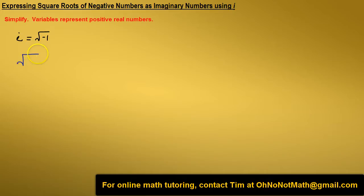First example, the square root of negative 2. That equals the square root of 2 times the square root of negative 1, which equals the square root of 2 times i. Again, the square root of negative 1 equals i.